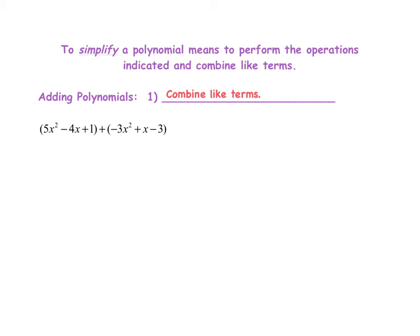I will first add my two x squared terms: 5x squared plus negative 3x squared, which would be 2x squared. Next, I'm going to look at my x terms. I have negative 4x plus positive x, so that will be negative 3x. And then finally, I'm going to look at the constants. I have positive 1 plus negative 3, and that will be negative 2. Adding polynomials is very straightforward — just make sure you are combining the like terms.